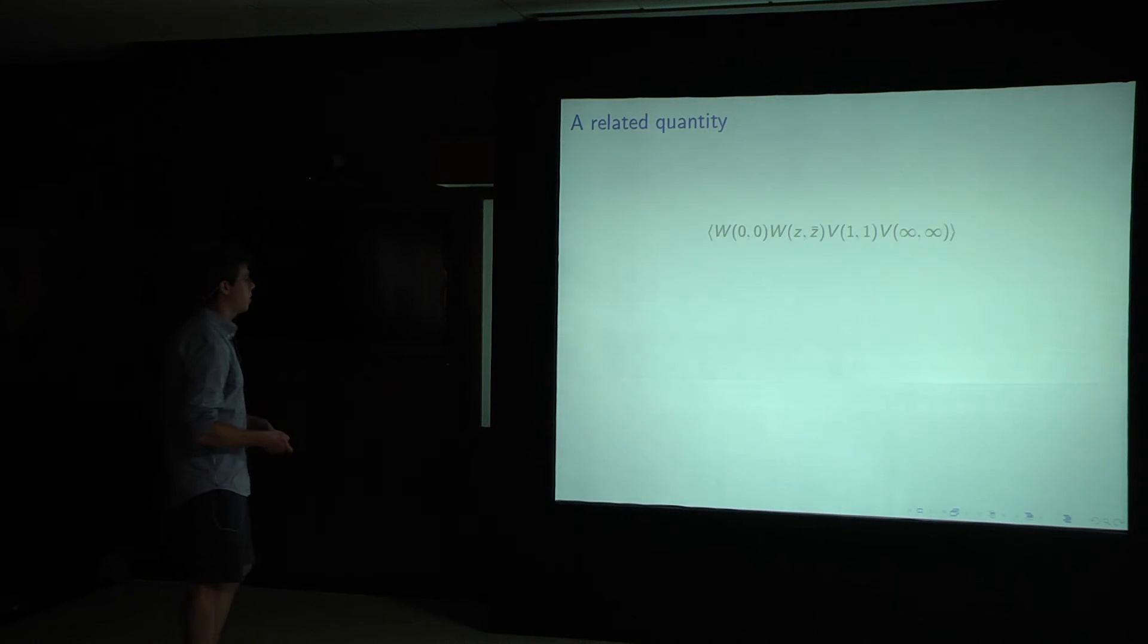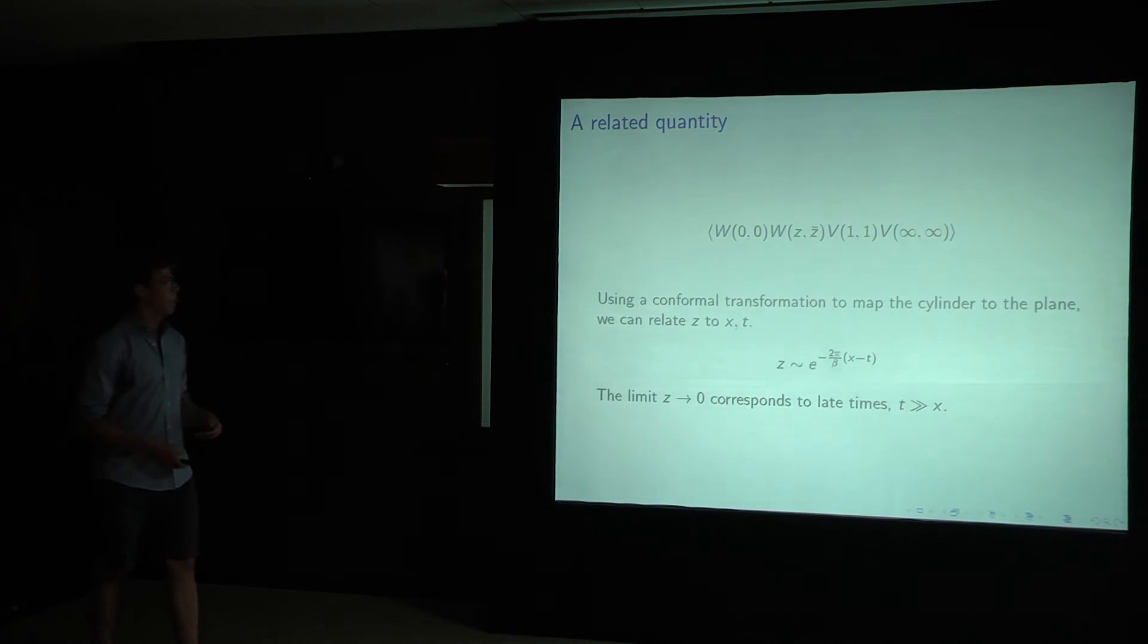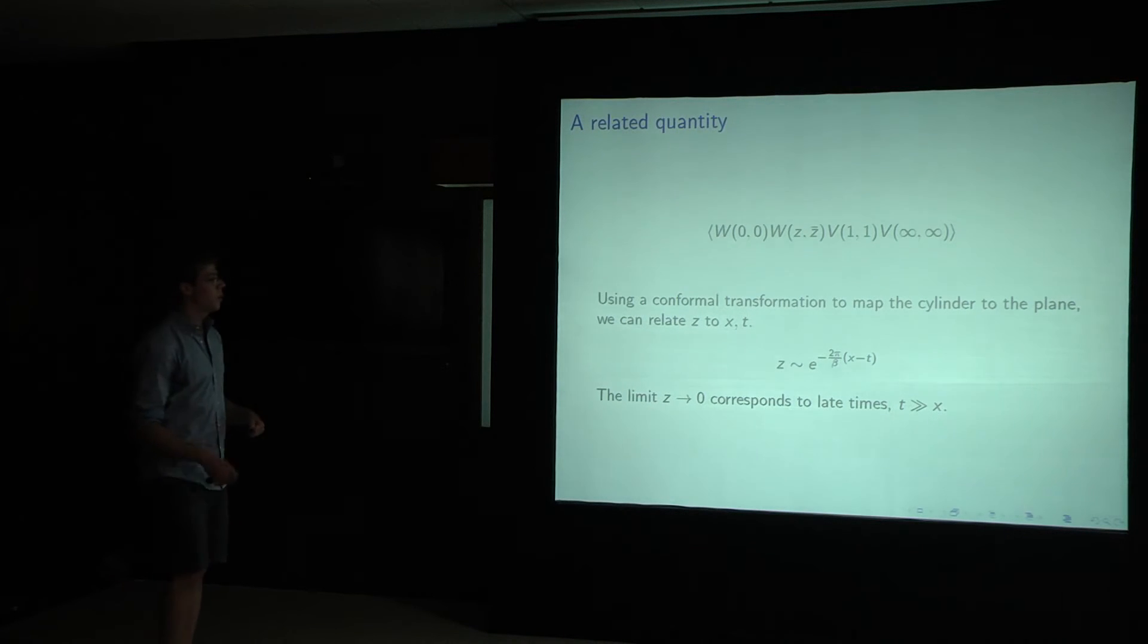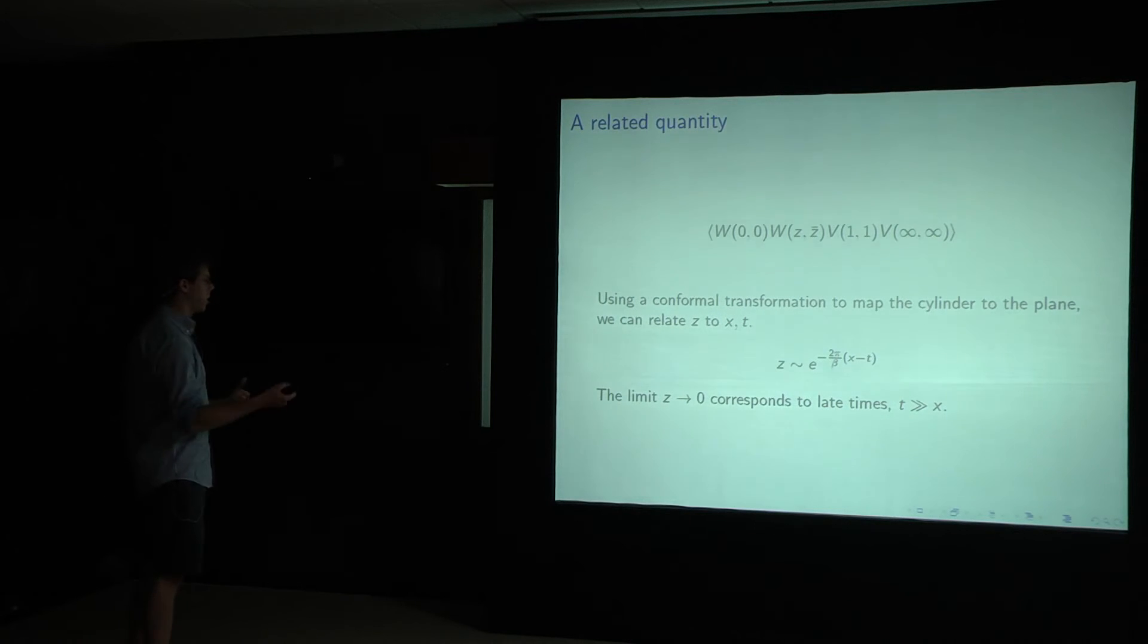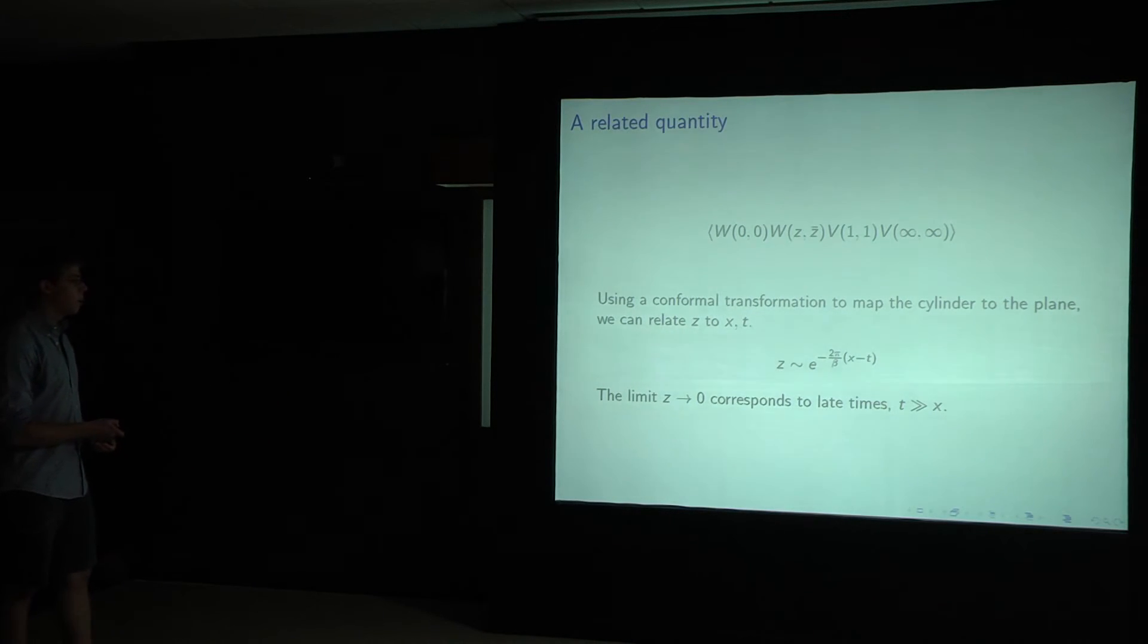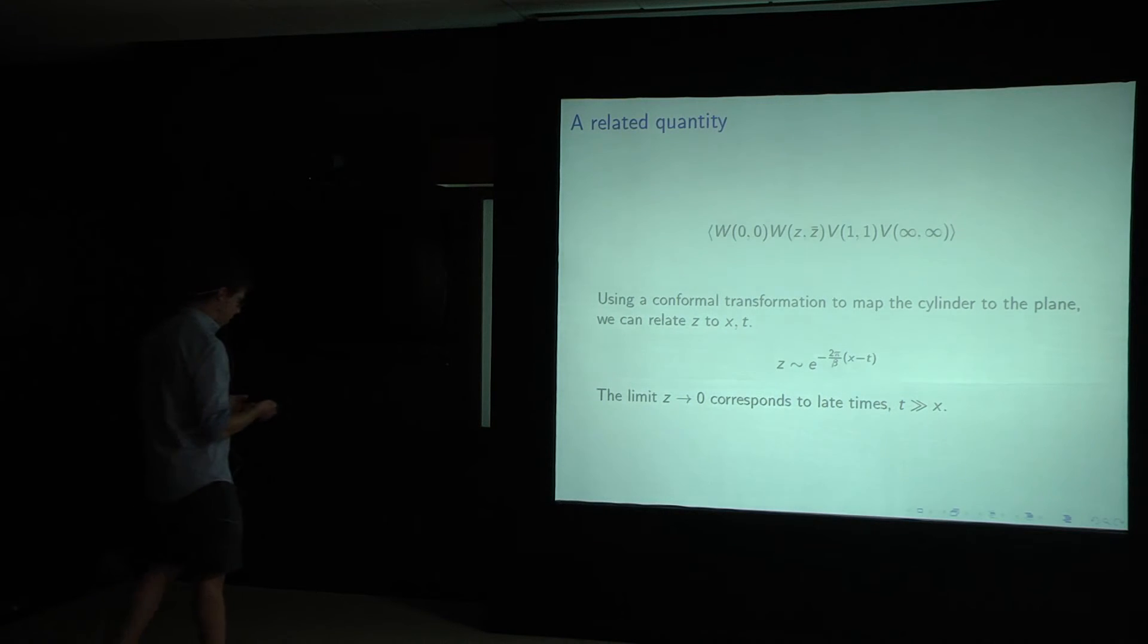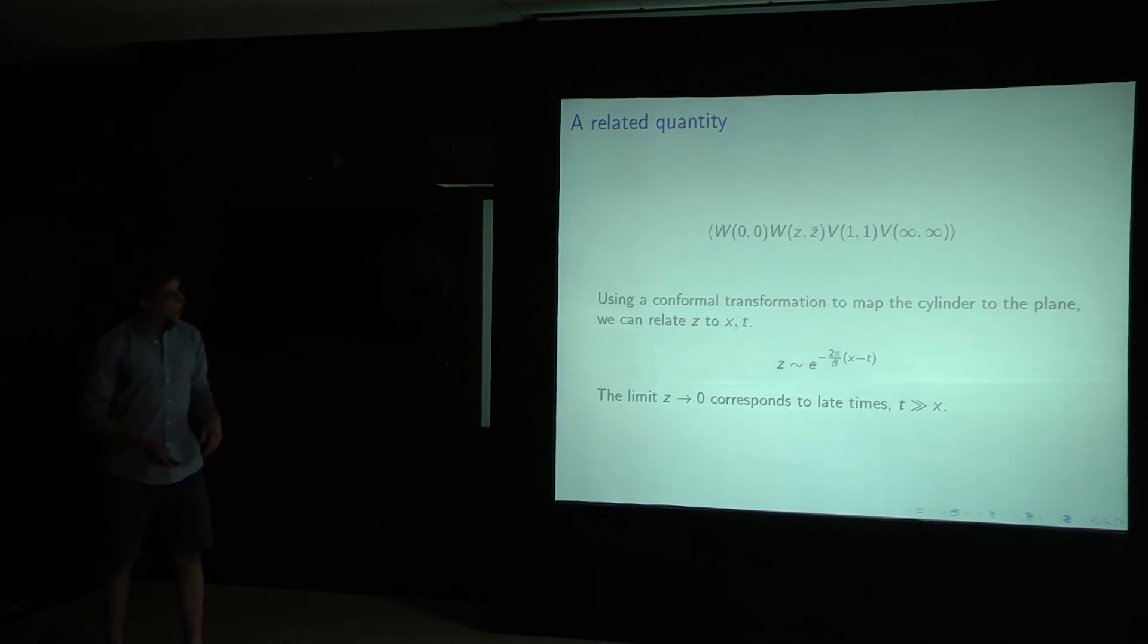And so that'll be our strategy. Additionally, using a conformal transformation to map the cylinder to the plane, or vice versa, we can, I guess the other way, I should say, we can relate z to the Lorentzian coordinates of interest. And the main takeaway of this is just that the limit of z going small is the late time limit that we're actually interested in.